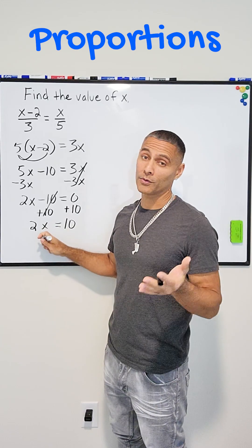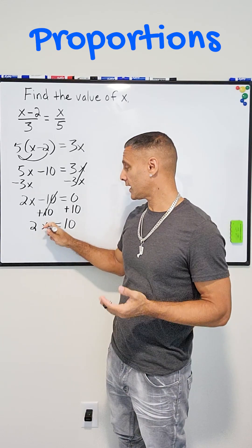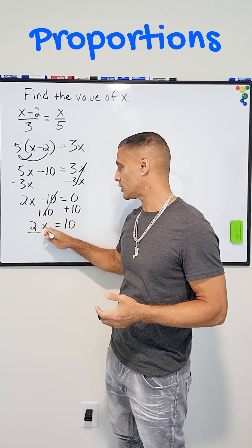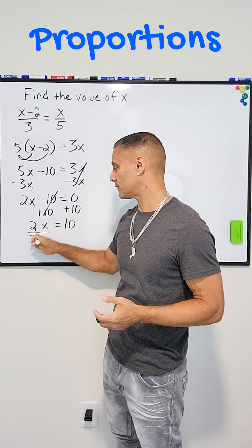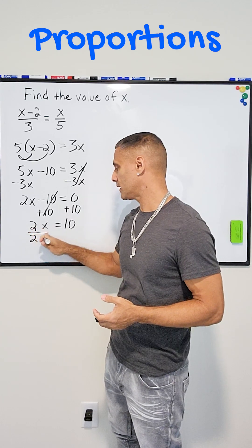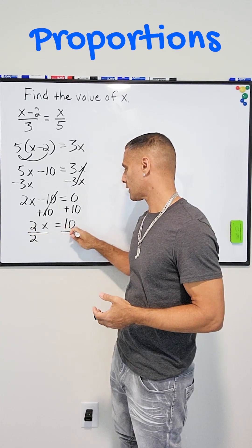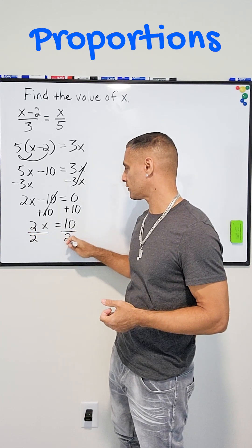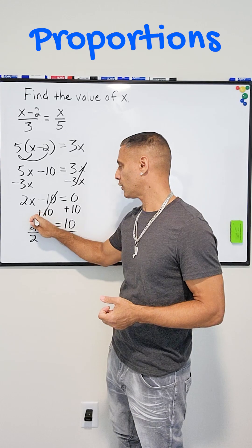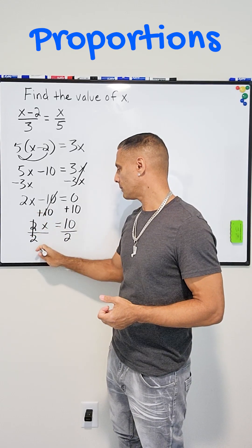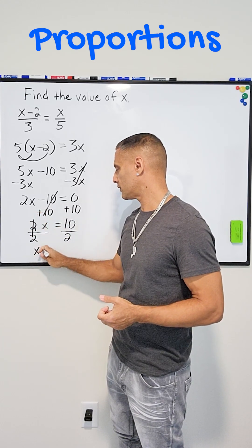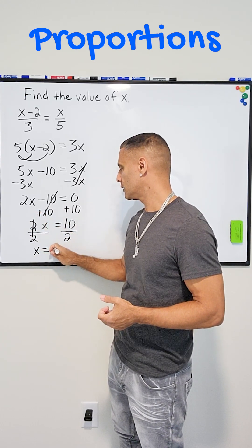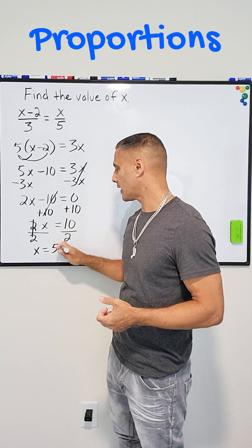Now we're almost there. We just have to isolate our variable by dividing the coefficient of 2 by itself, and we balance our equation by dividing 2 on the other side as well. So we end up getting x is equal to 10 divided by 2, which is equal to 5.